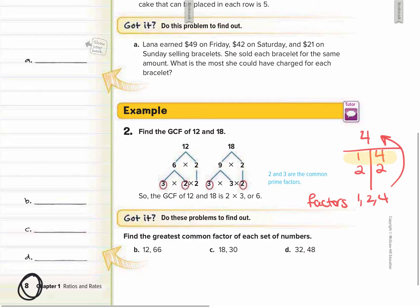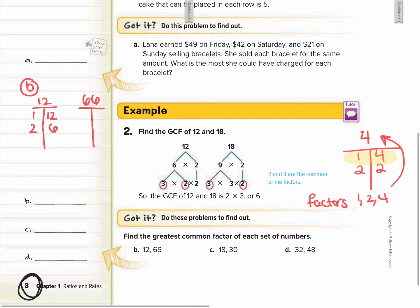So today we're going to be doing greatest common factor. I'm going to do letter B over here in the work zone. We want to find the greatest common factor of 12 and 66. I'm going to use this t-chart. We know that the first two factors of every number are 1 and the number itself, so those are the first two factors of 12. Now we want to see if there's any number times 2 that goes into 12 — yes, there's 2 times 6.